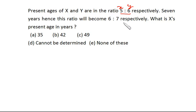Now I just write over here: X and Y, it's 5:6 and 6:7. This is present, this is after 7 years.